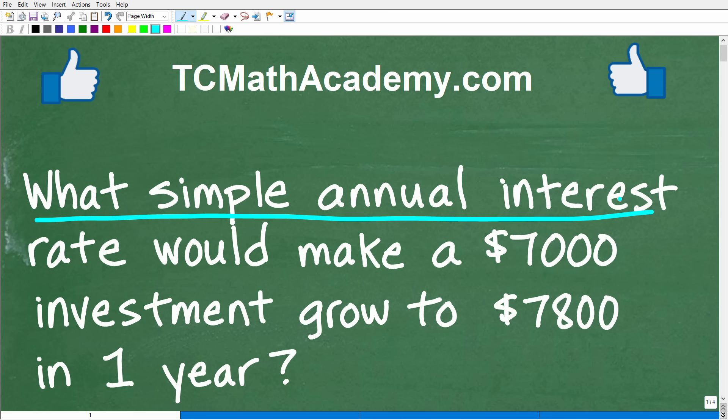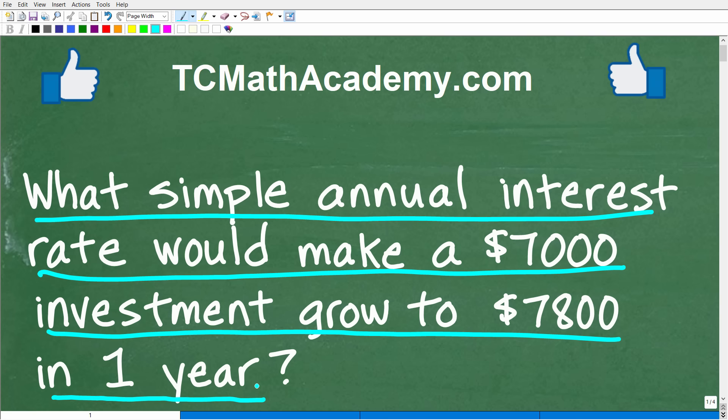What simple annual interest rate would make a $7,000 investment grow to $7,800 in a one-year period?